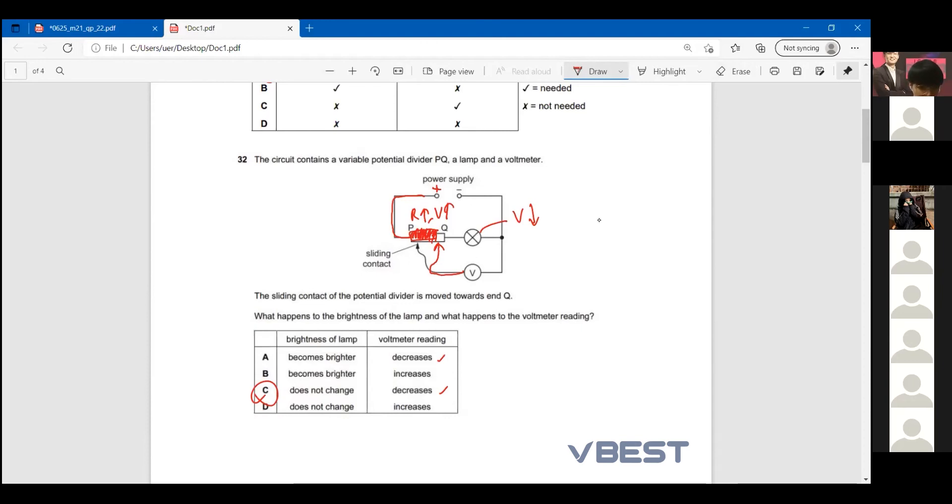Why does the V for lamp decrease? Because this is series circuit. Series circuits share the voltage. Let's say this is 10 volt - if this is 2 volt, this is 8 volt. Now my PQ increased to let's say 7 volts, so this one left only 3 volt.